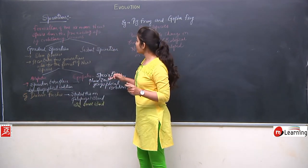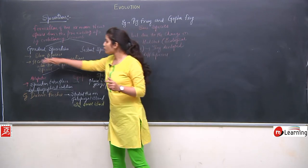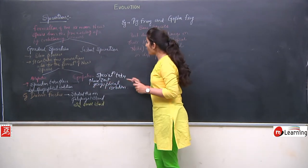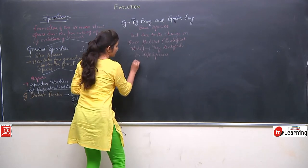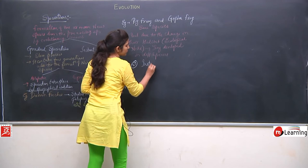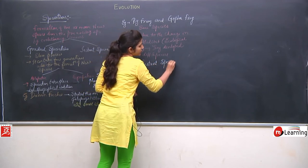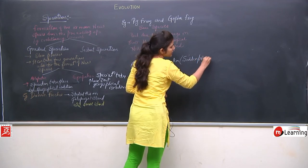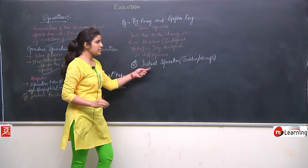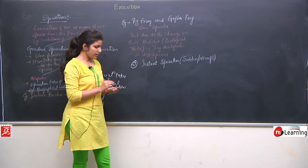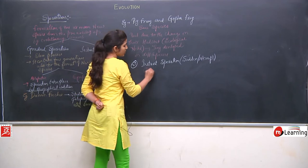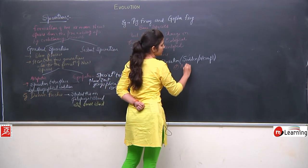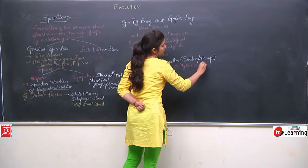The next category of speciation is instant speciation, also called sudden speciation or abrupt speciation. Gradual speciation has two means — allopatric and sympatric. Instant speciation also takes place by two means: the first one is mutation and the second one is hybridization.